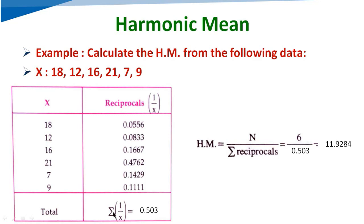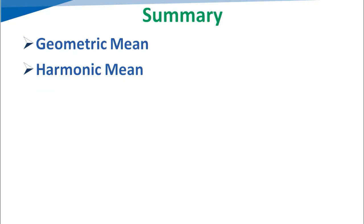Then we have to find the summation of 1 by x. Total summation equals 0.503. Then we will apply the equation: HM harmonic mean equals n divided by sigma reciprocals, equals 6 upon 0.503. So the answer will be 11.92. Both harmonic mean and geometric mean are easy.